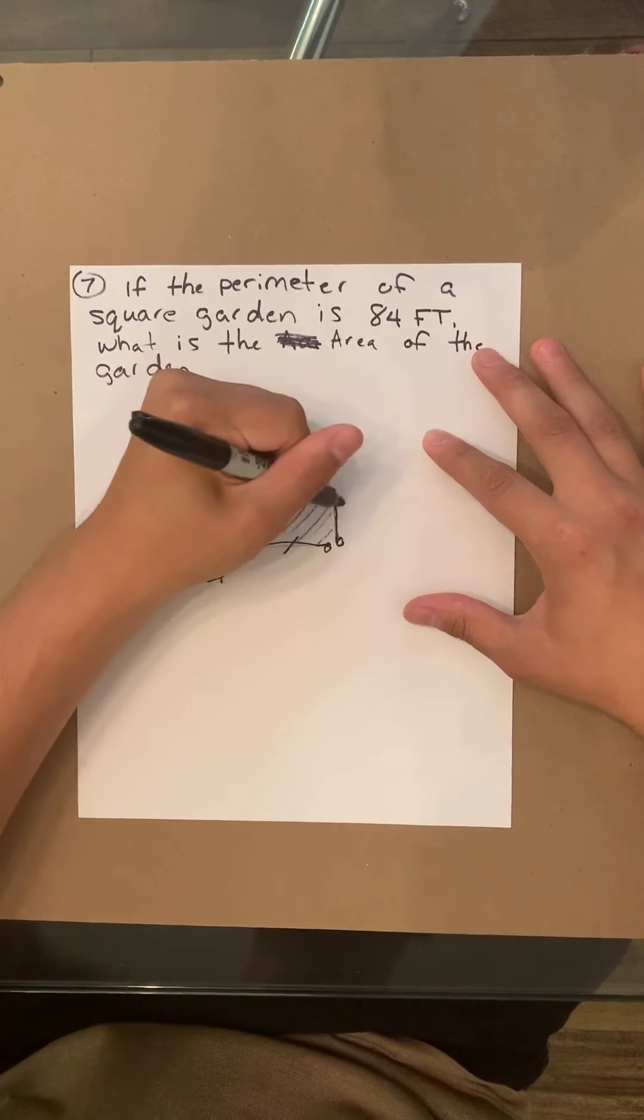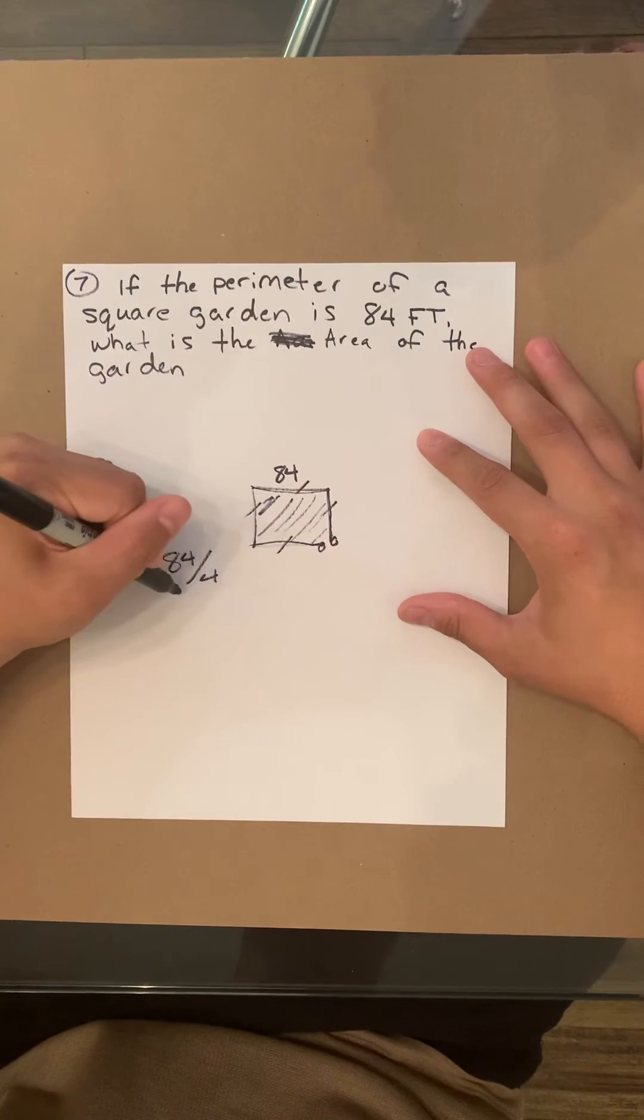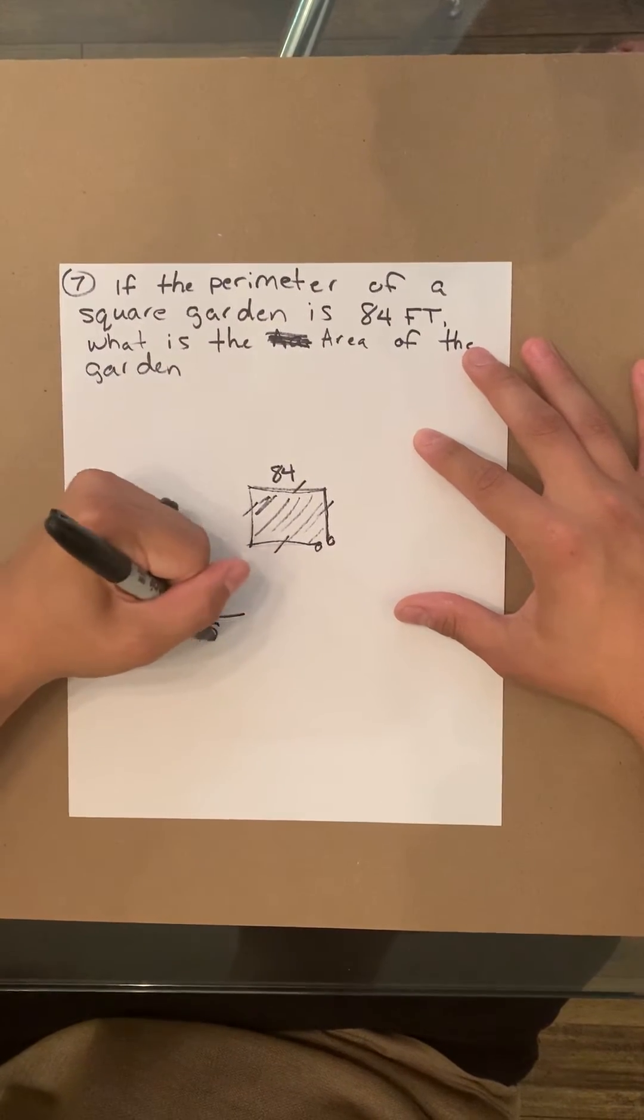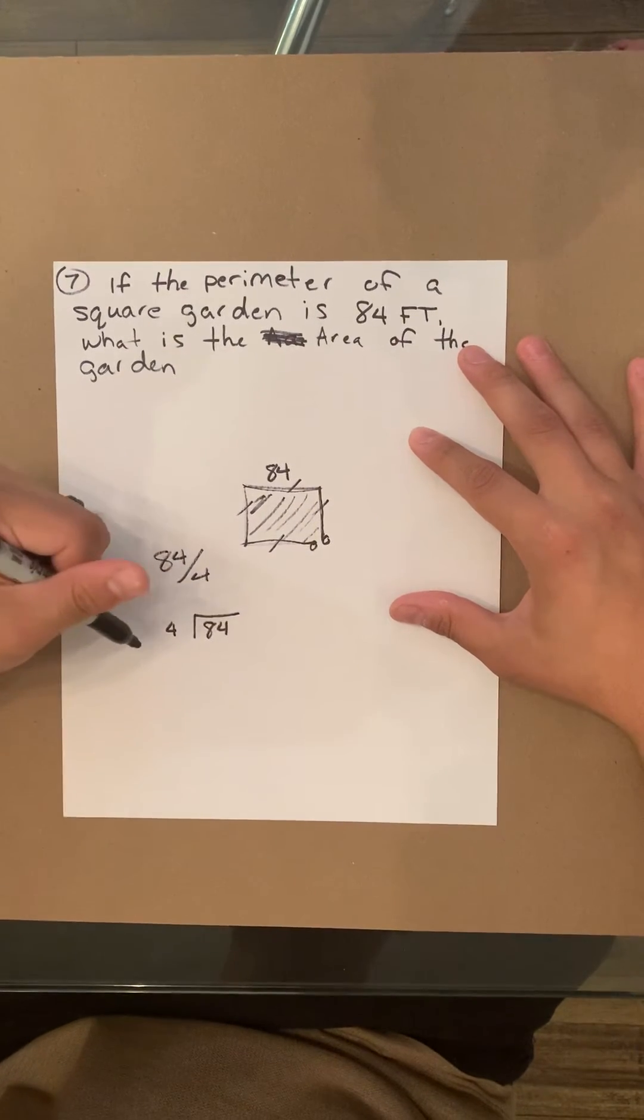1, 2, 3, 4. So 84 divided by 4. We'll do the actual math for it real quick. So 84 divided by 4.